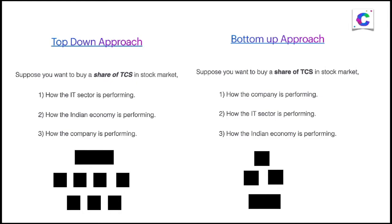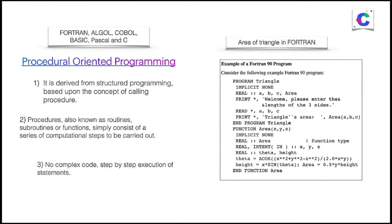Based on these factors — how the IT sector is performing, how the Indian economy is going, and how the company is performing — you take a decision to buy the share of TCS. Whereas in the bottom-up approach, which object oriented programming follows, you look from bottom to top: how the small company is performing, then how the IT sector is performing, then how the Indian economy is performing. The main examples of procedural oriented programming are C, Fortran, COBOL, BASIC, and Pascal.